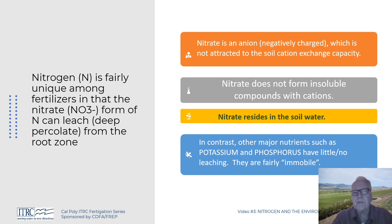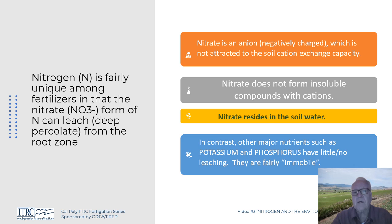The whole business of nitrogen leaching from the root zone — going down with excess irrigation water or rainwater — makes it different from other major nutrients. Nitrate is an anion; it's negatively charged, so it's not attracted to the cation exchange capacity and doesn't get tied up with other ions. Unlike phosphorus, which combines with calcium and magnesium and drops out, nitrate stays in the soil water and is very mobile.